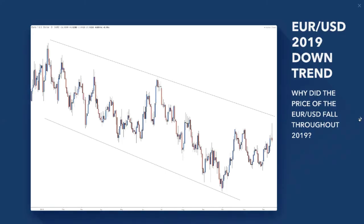Euro/dollar 2019 downtrend — could this have been predicted? Of course it could. I don't even like using the word 'predictions' because what I tend to do is look at the balance of probabilities of one thing happening over another. Of course I can be wrong or right, but when I'm right we try to make as much as we can, and when we're wrong we're risk managers.